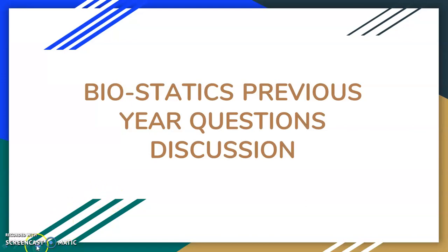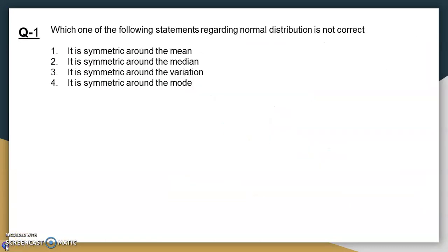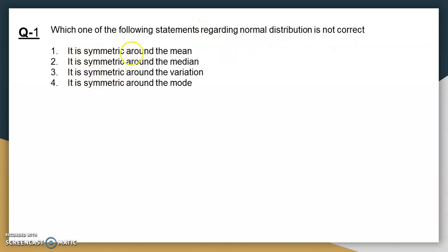So see the first question — these are all CSIR questions. The first question is: which one of the following statements regarding the normal distribution is not correct? It is symmetric around the mean. It is symmetric around the median. It is symmetric around the variation. It is symmetric around the mode.